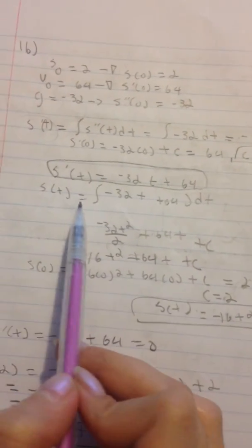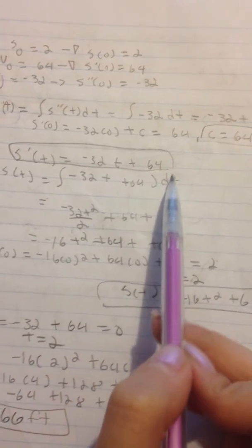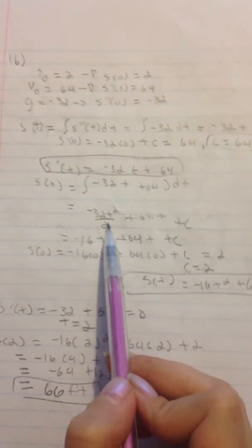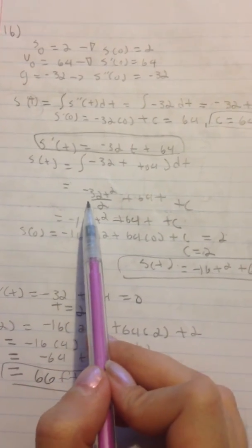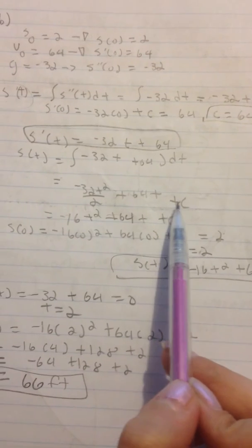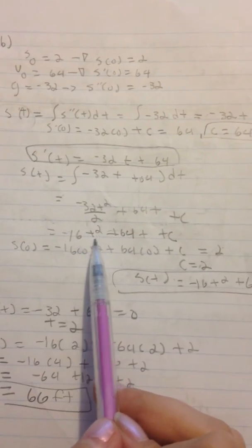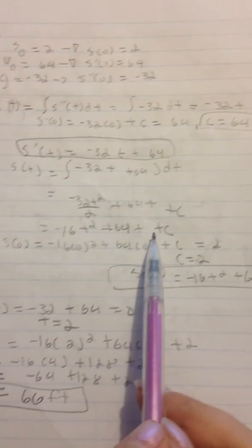S of T equals the integral of negative 32T plus 64 DT. Now we use the power rule. We get negative 32T squared divided by 2 plus 64T plus C, which equals negative 16T squared plus 64T plus C.